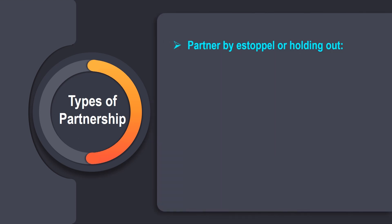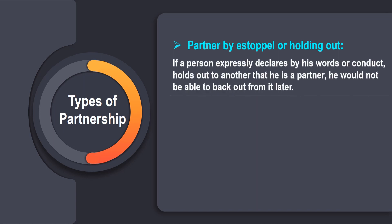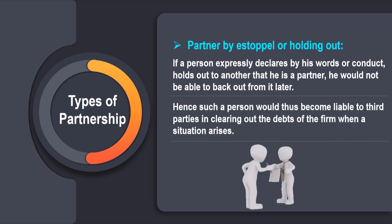Next is a partner by estoppel or holding out. If a person expressly declares by his words or conduct that he is a partner, he would not be able to back out from it later. Such a person becomes liable to third parties in clearing out the debts of the firm when a situation arises.